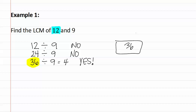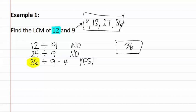As you can see, we saved time because we didn't find all the multiples of nine. We would have done nine times one is nine, times two is eighteen, times three is twenty-seven, and times four is thirty-six. I saved myself from writing this list by simply looking at only the multiples of the larger number.